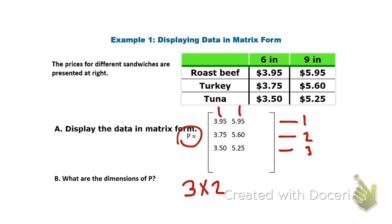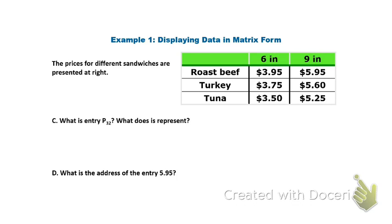Let's use this same table again for some more information. Now let's look at some addresses and some entries. What is entry P sub three, two? So the three, remember, is the row. So we want the third row. Row one, two, three. And then we want column two. One, two. So third row, column two. We find that we have the entry of $5.25.